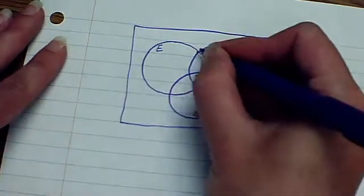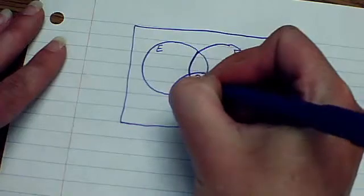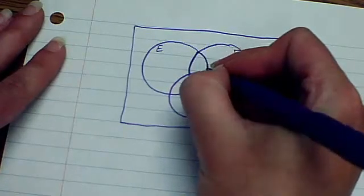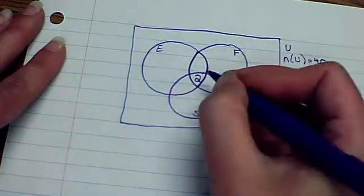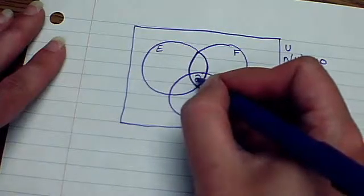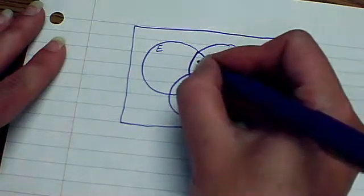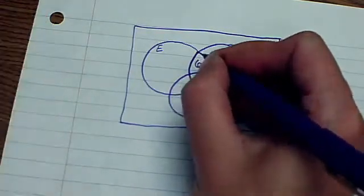Now that means English and French at the same time. English and French would be the intersection of English and French. Now if it's eight total and we have two here, then that leaves six for here.